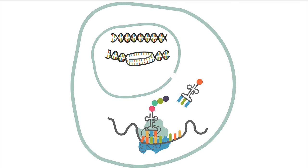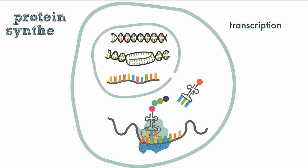DNA is very long and cumbersome, and the strands of DNA code for many different proteins. To get the code for the desired protein from the nucleus to the ribosomes in the cytoplasm, a copy of the small necessary section of DNA will be made. The copying process is called transcription, and it occurs in the nucleus. It's the first step in protein synthesis, the process of making protein. The second step is called translation.